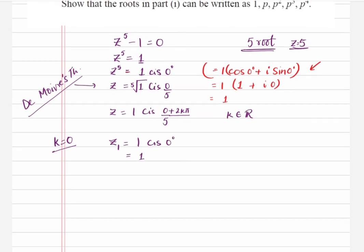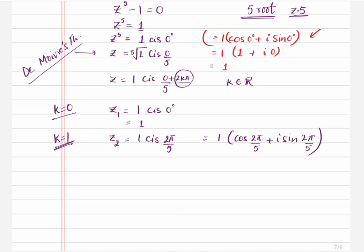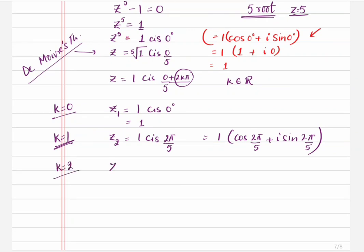Then we find z₂: when k = 1, we have 2π in the numerator, so z₂ = 1 cis (2π/5). You can leave it there — that's absolutely fine. If you want, you can expand it as cos(2π/5) + i sin(2π/5) for the rectangular form, but since the question just asks for the roots, leaving it in polar form is okay. When k = 2, z₃ = 1 cis (4π/5).